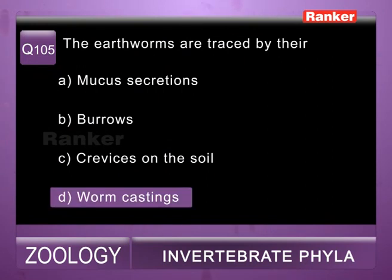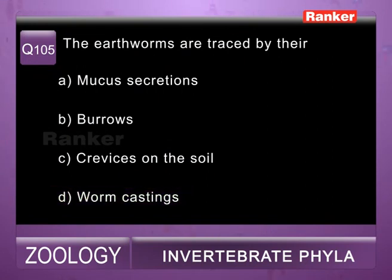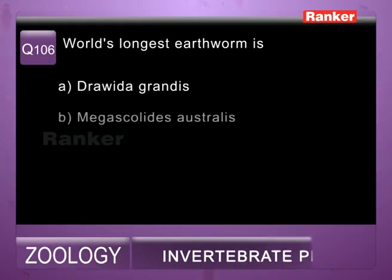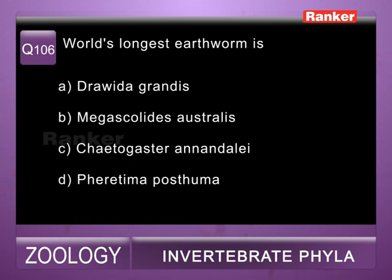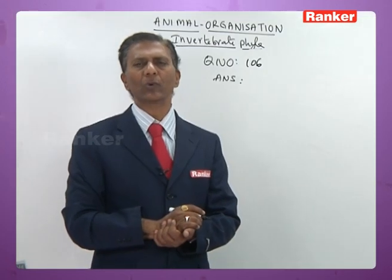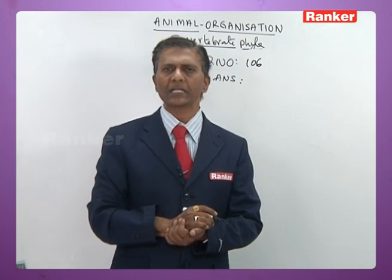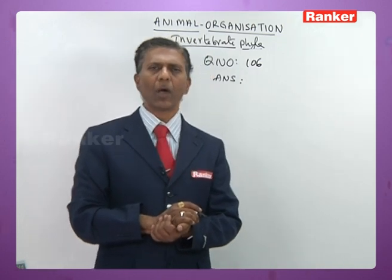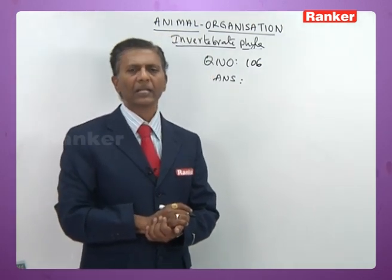Question 106: world's longest earthworm is — a) Dravida grandis, b) Megascolides australis, c) Khetogaster annandalei, d) Pheretima posthuma. Megascolides australis is the longest earthworm in the world (Dravida grandis is the longest in India). So 106th question correct answer is b.